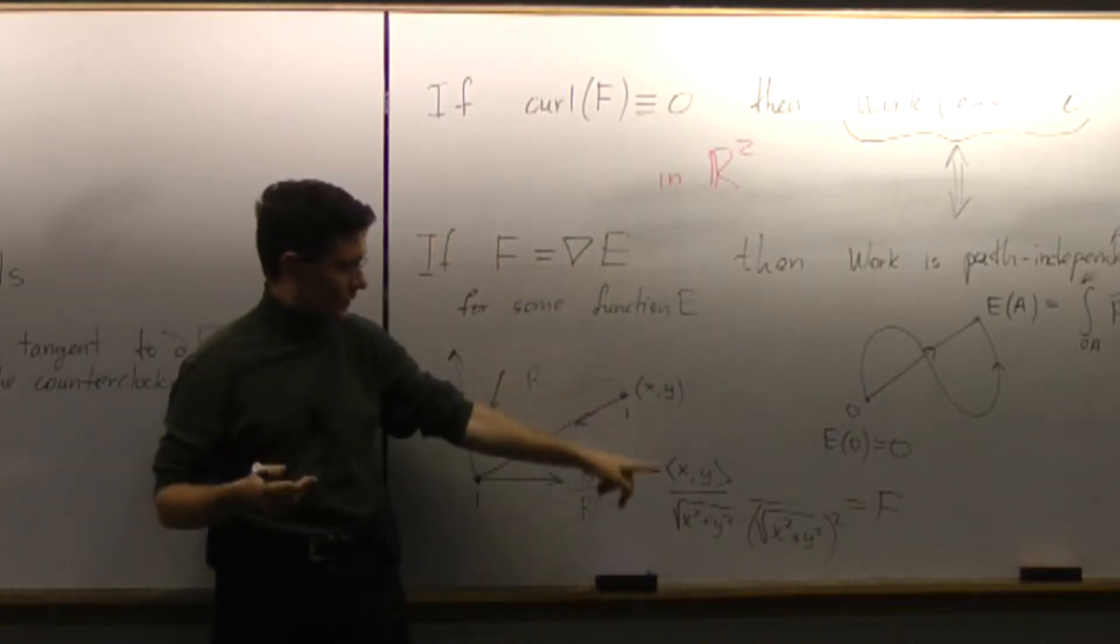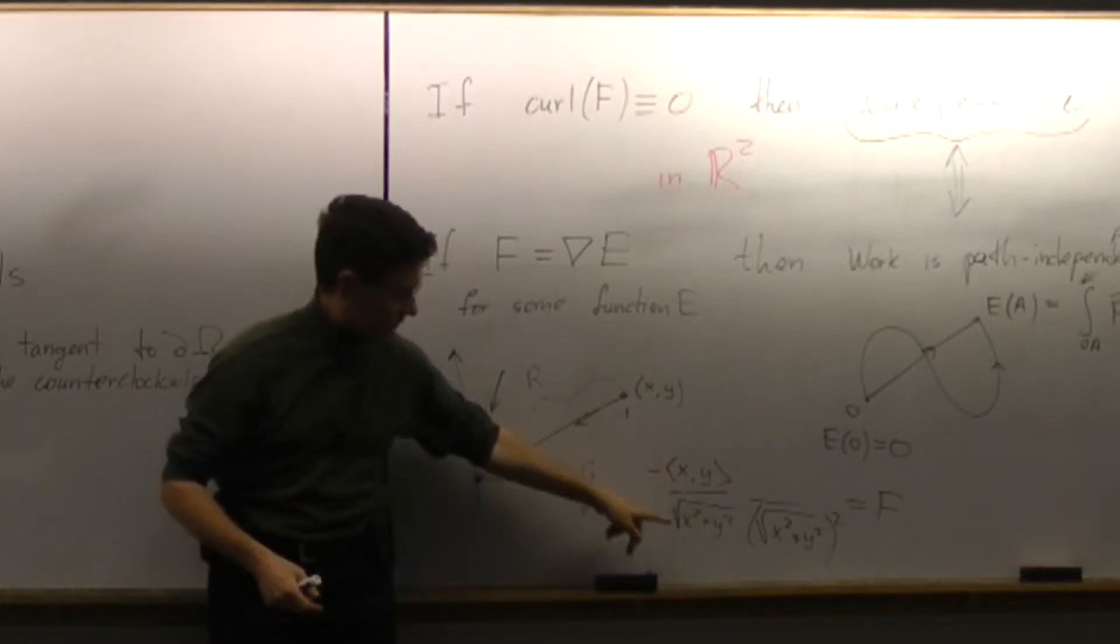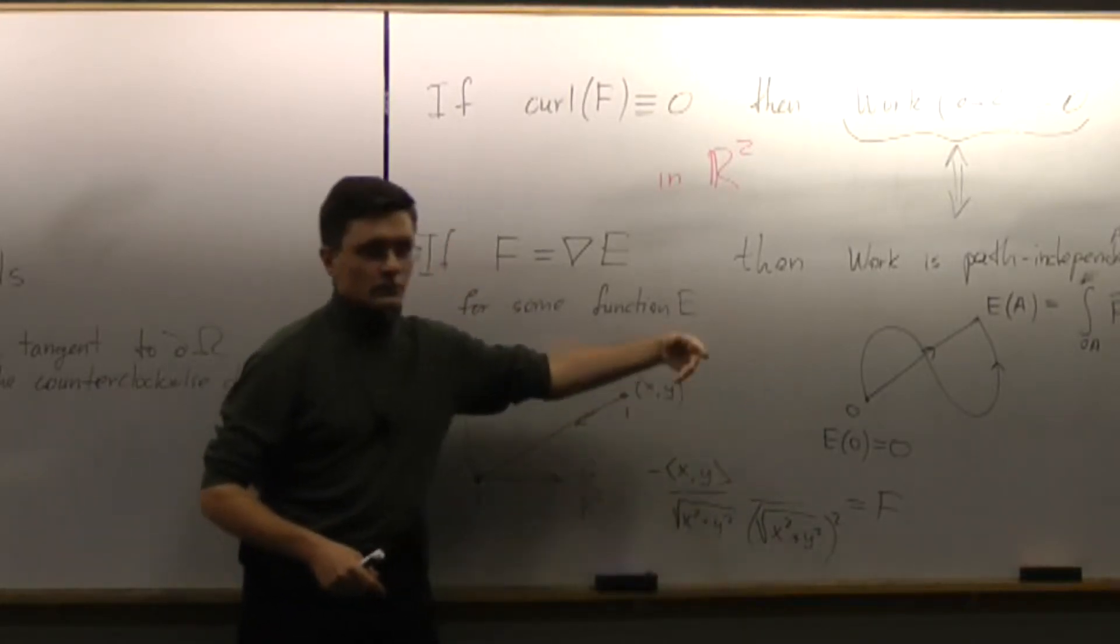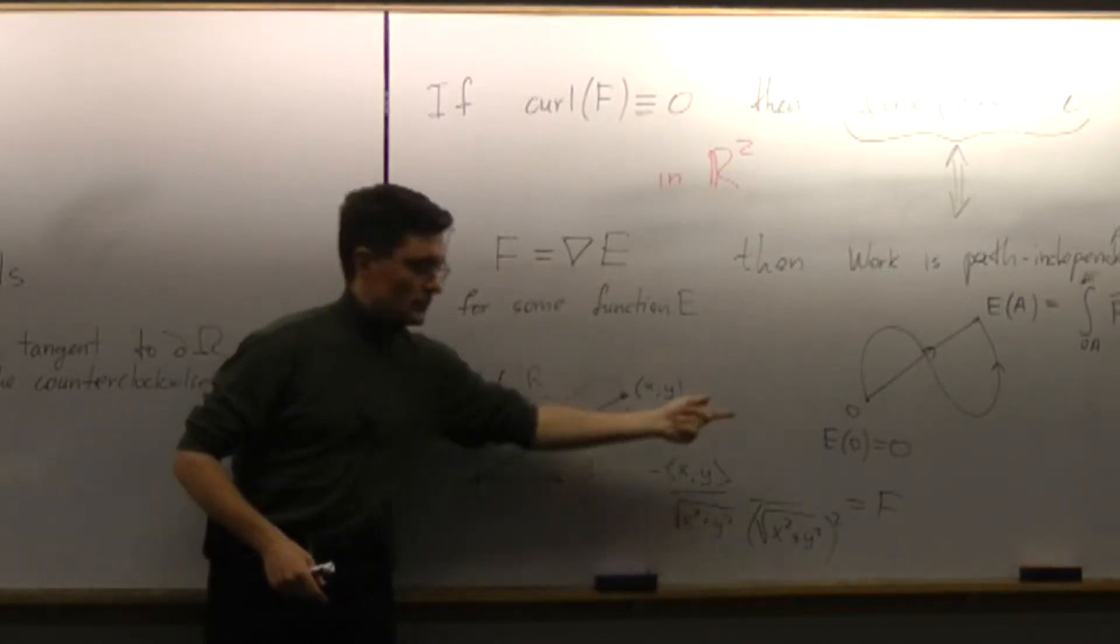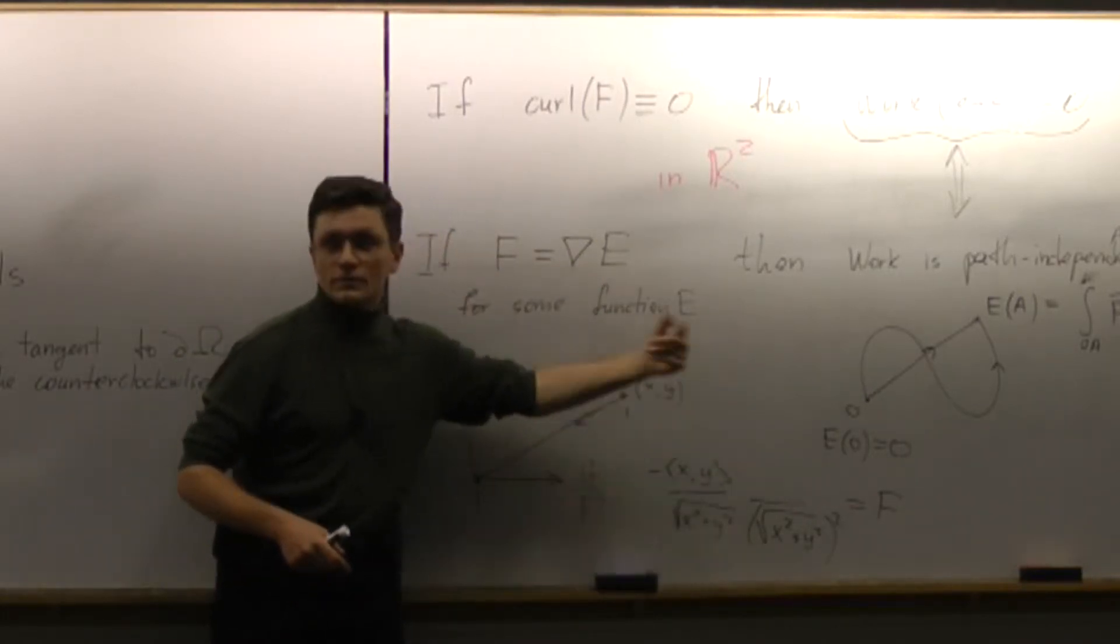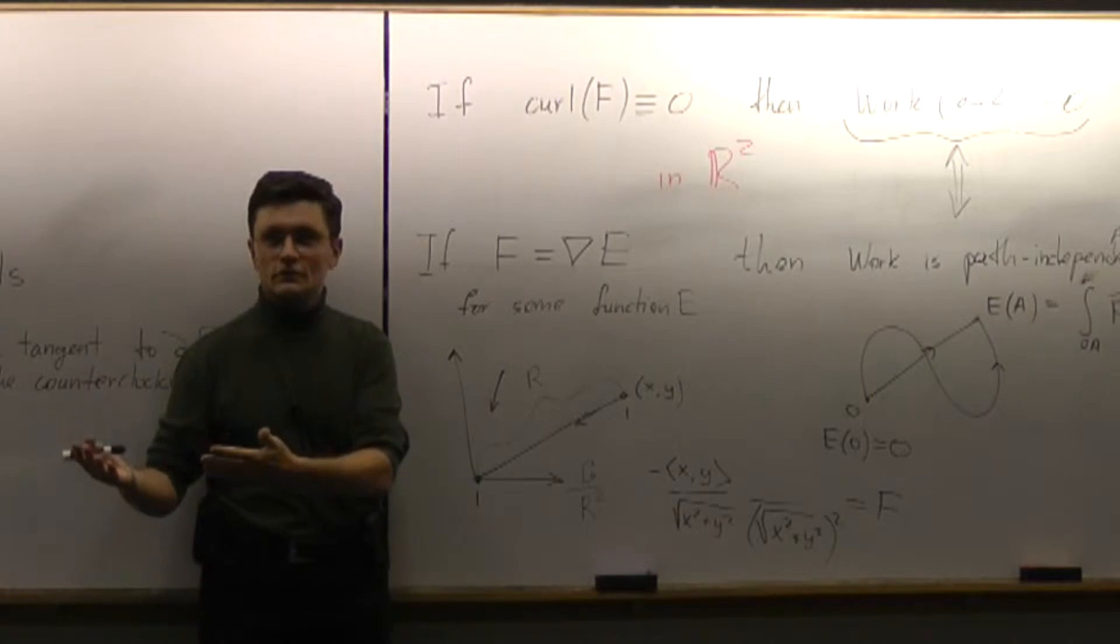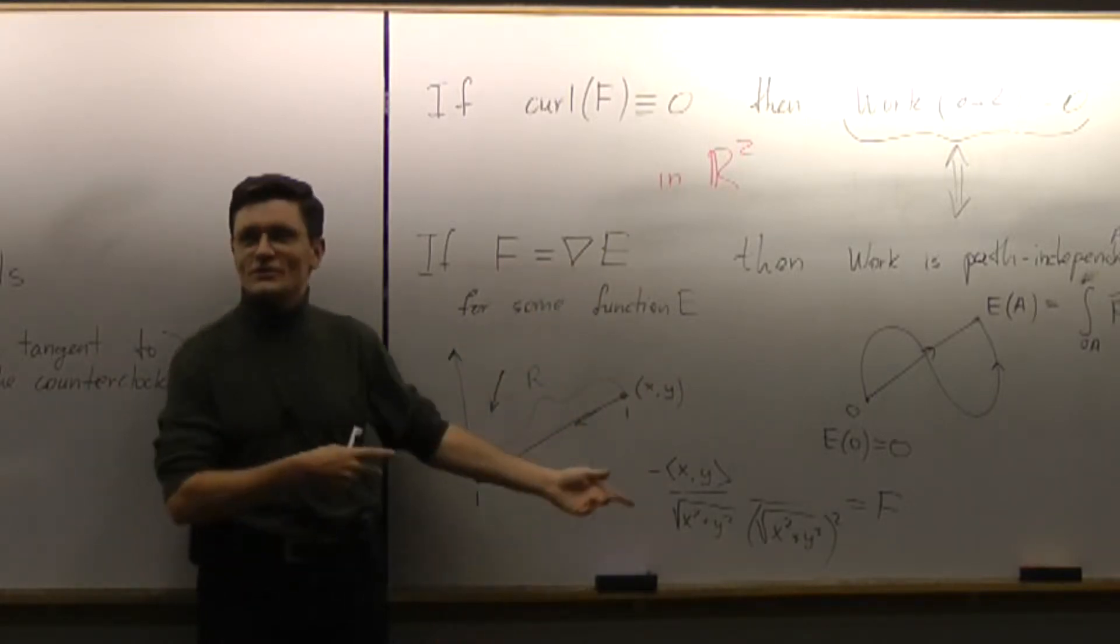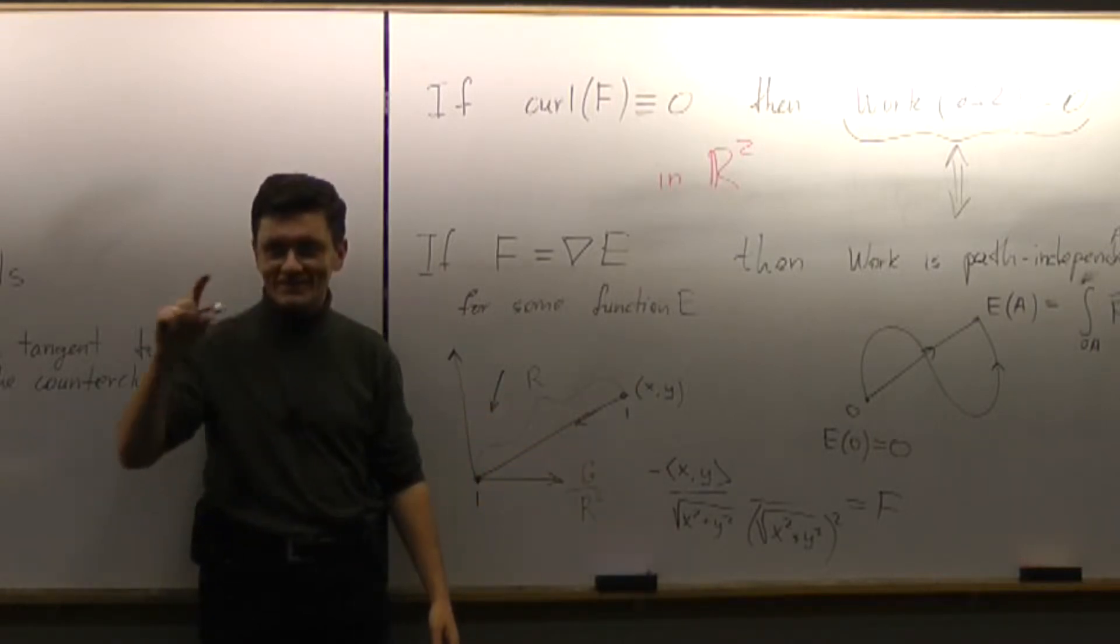It says that you have to take these two components. Well, x divided by square root cubed and y divided by square root cubed. Take derivatives of the first with respect to y, of the second with respect to x, subtract, and see if that is identically zero. If it is always zero, then you can check it with Wolfram. I did it this morning. It says the answer result is identically zero.